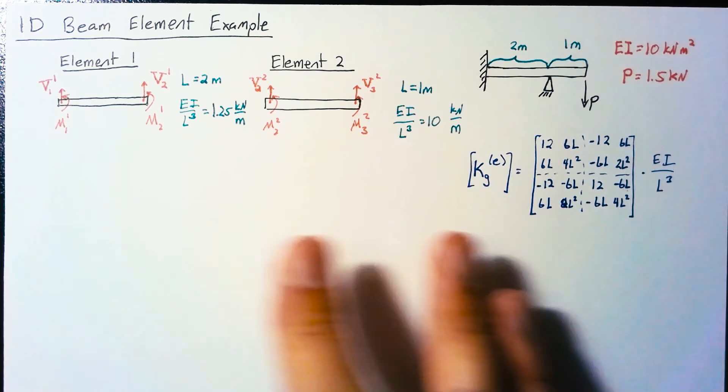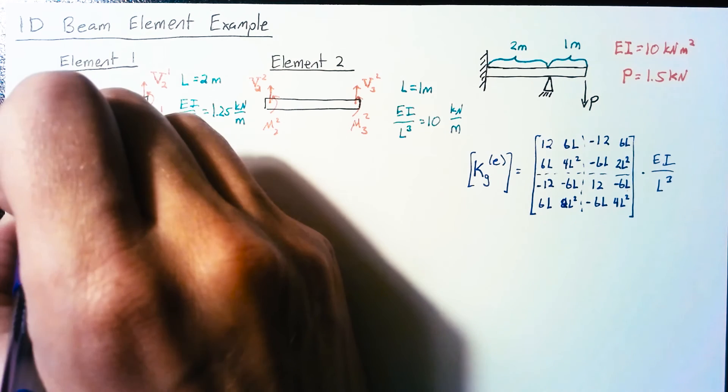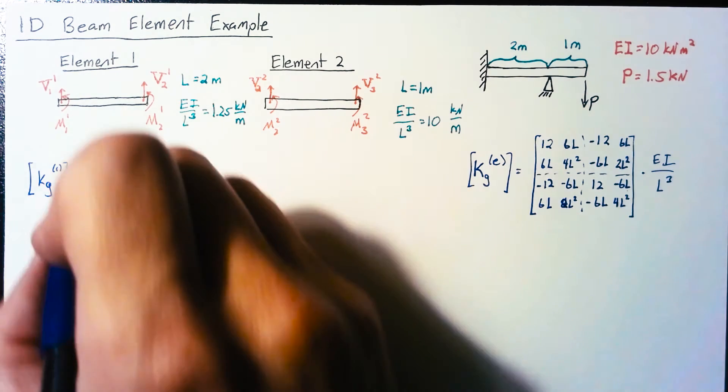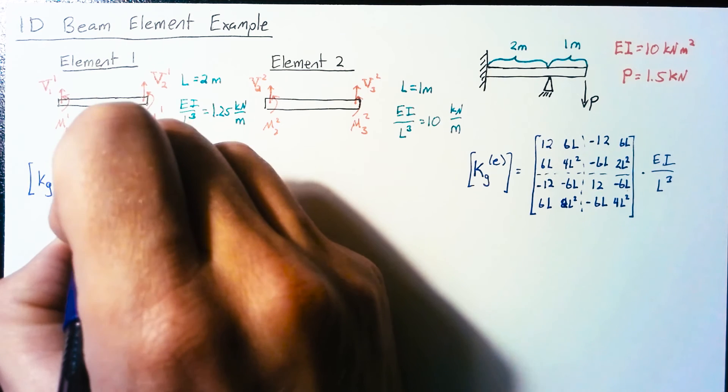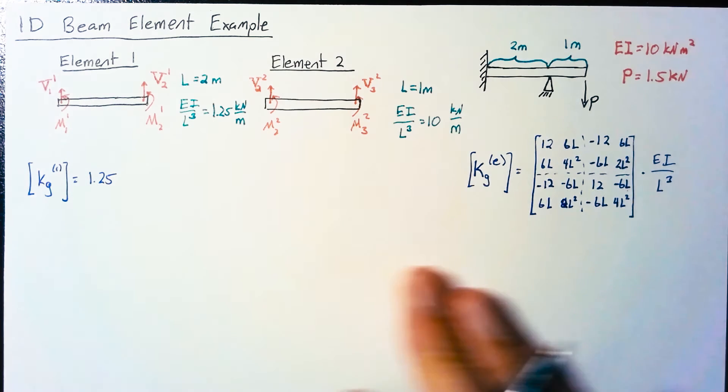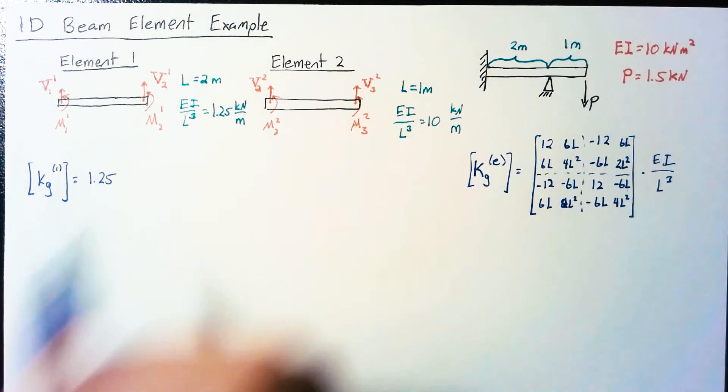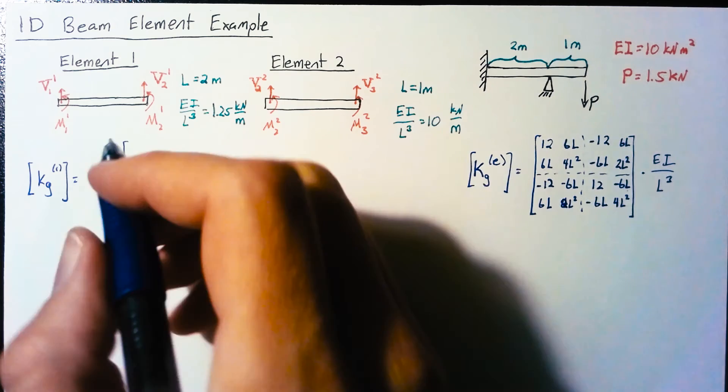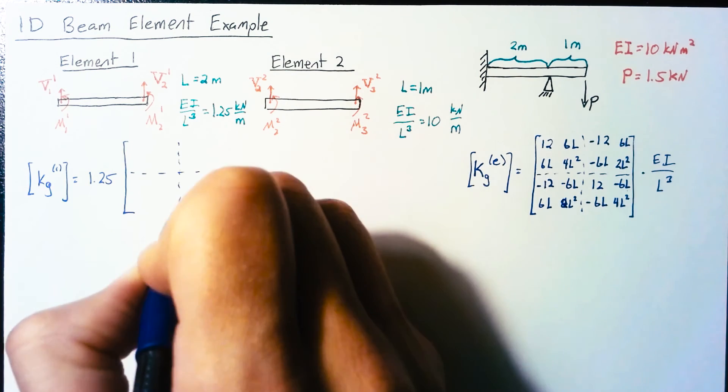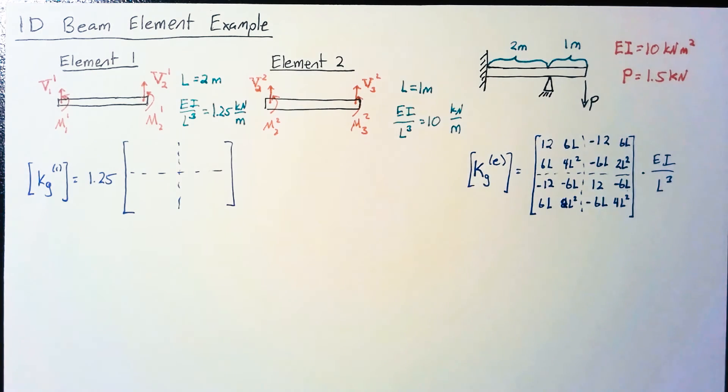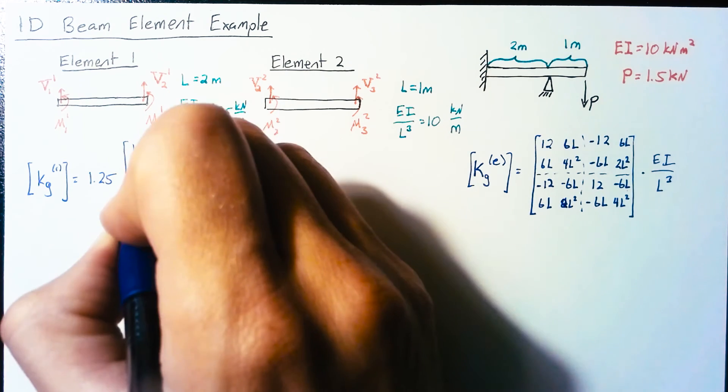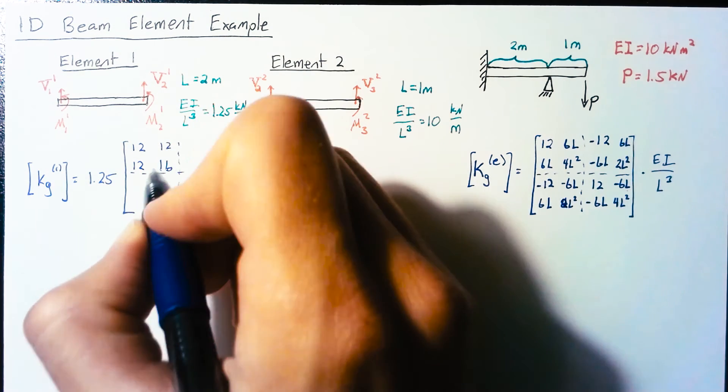Now let's apply this to each element. For element one, EI over L³ is 1.25. I'm going to drop the units since they get messy inside the matrix. L for this case is 2, so we have 12, 12, 12, 16, then -12, 12, -12, 8.